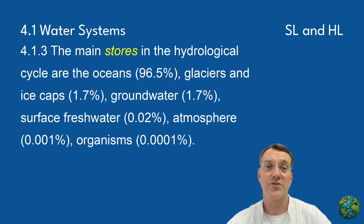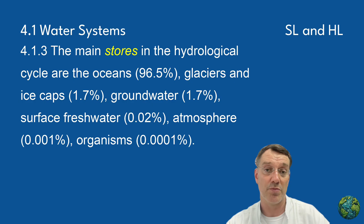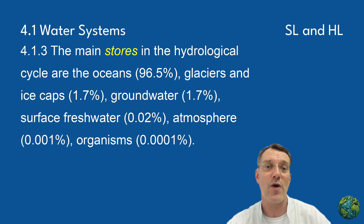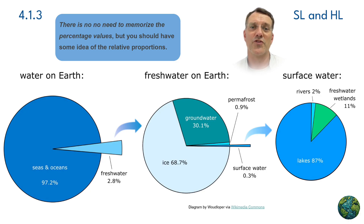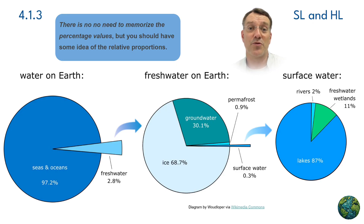The main water stores in the hydrological cycle include the oceans at 96.5%, glaciers and ice caps at 1.7%, groundwater at another 1.7%, then surface freshwater, atmosphere, and organisms all at fractions of a percent. You don't need to memorize these numbers exactly, but you should know how big each part is compared to the others. The first pie chart shows that 97% of Earth's water is in seas and oceans, with only 2.8% being freshwater. The second pie chart shows that 68.7% of Earth's freshwater is in ice and 30% is in groundwater, and only 0.3% is surface water.